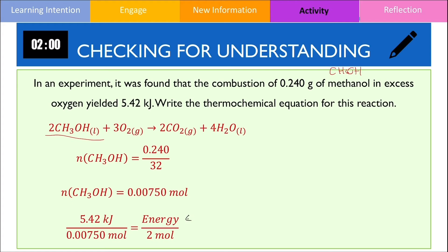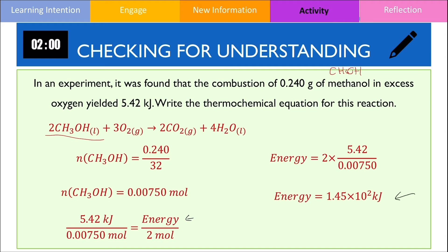Using mole ratios, we can set up an equation to find the energy released from 2 moles of methanol. We solve for energy by multiplying by 2 on both sides of the equation, giving an answer of 1.45 × 10² kilojoules. To express this as the enthalpy change of the reaction, we add a negative sign because combustion is an exothermic process, then add the units kilojoules per mole. The thermochemical equation for this reaction should look like this.